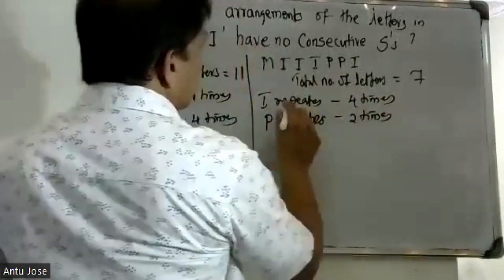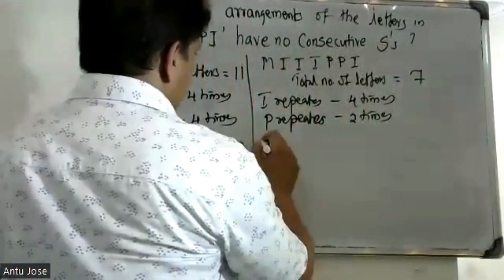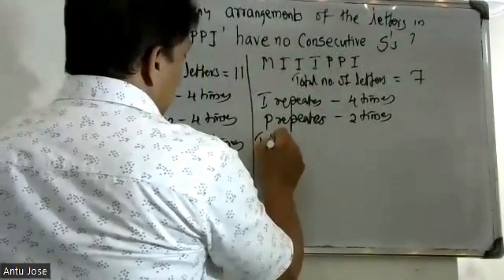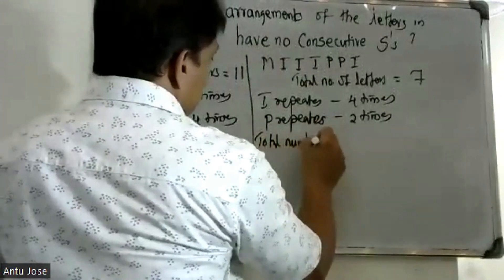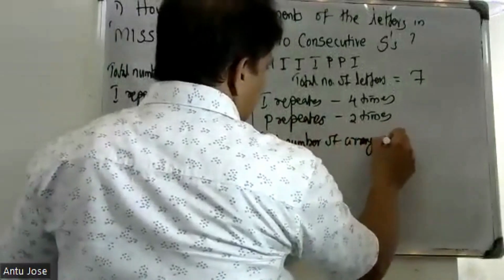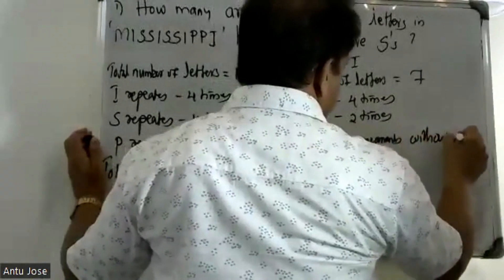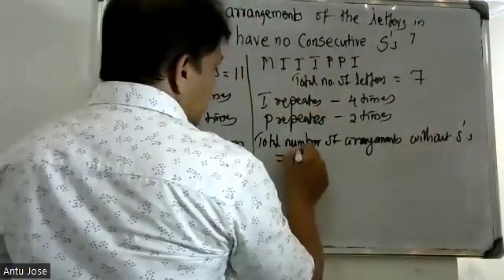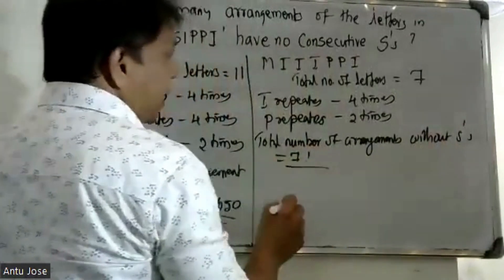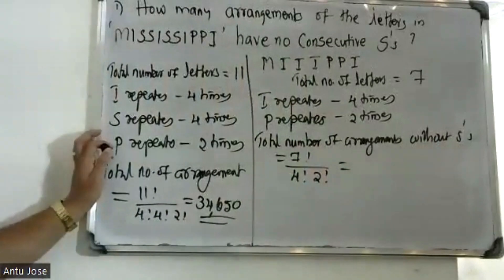Therefore, the number of arrangements of the remaining letters is 7 factorial divided by 4 factorial into 2 factorial.